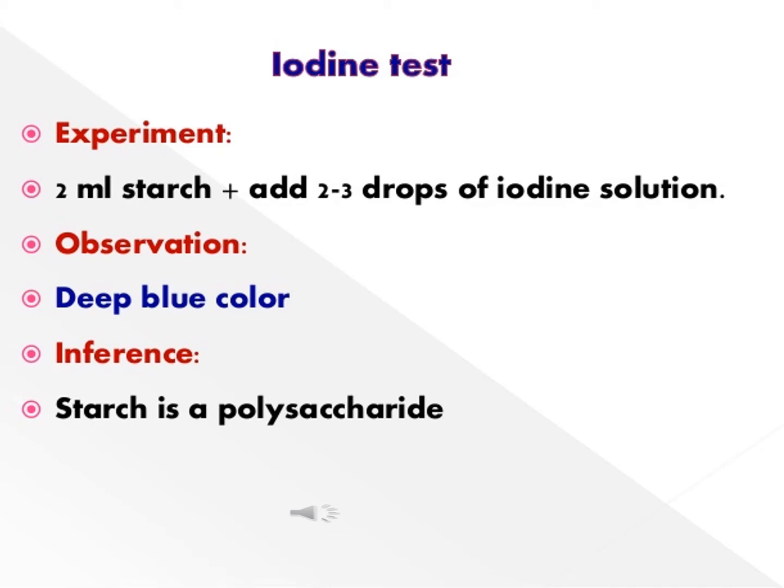The iodine test uses iodine to test for the presence of starch — it is a common experiment. A solution of iodine and potassium iodide in water has a light orange-brown color. If it is added to any sample that contains starch, such as plant leaves, bread, or potato, a reaction occurs.